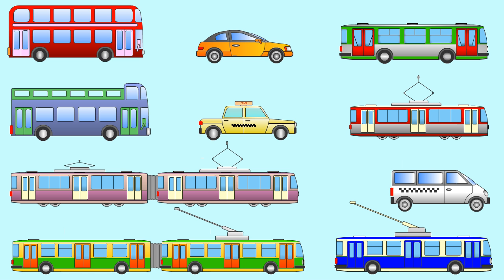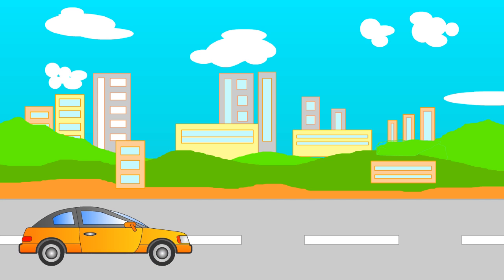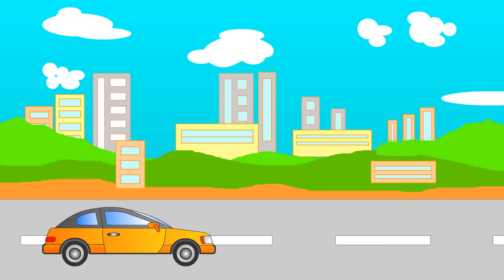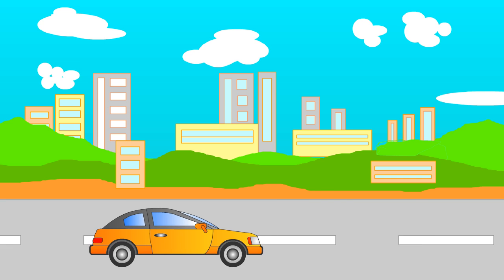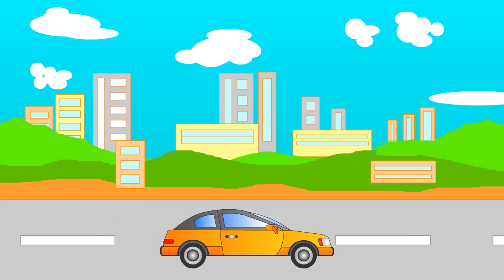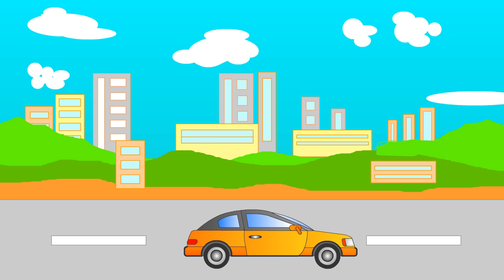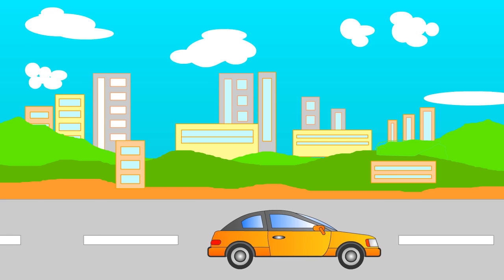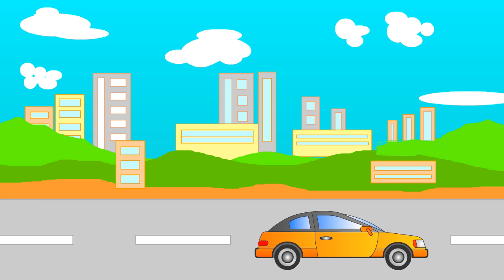There are different types of cars on this picture. Now we'll learn more about them. This passenger car is used only by its owner. But we will talk about the cars used by all the city inhabitants.